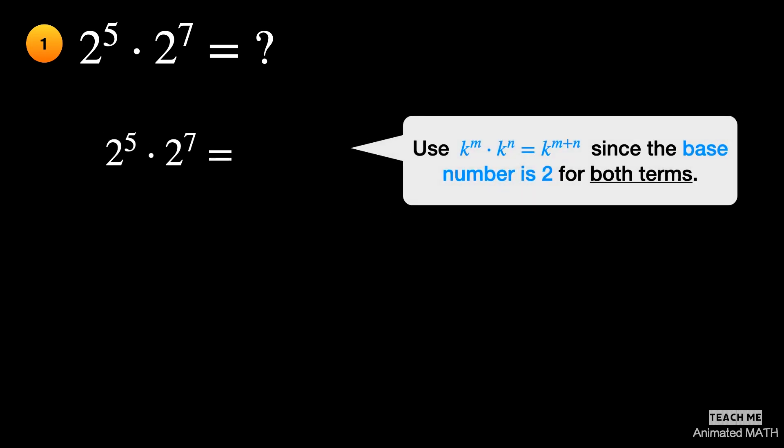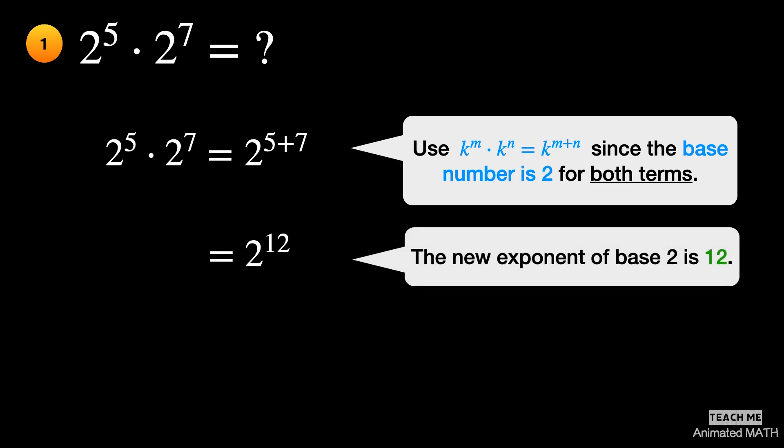Use the 5th property of exponents, since the base number is 2 for both. Add the exponents 5 and 7. The final answer is 2 to the 12th power.